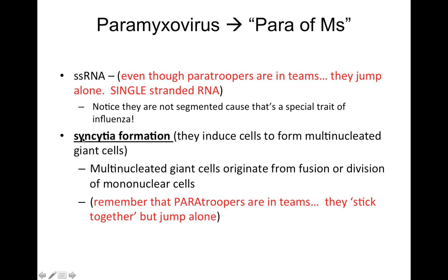Syncytia formation — this is a word you'll probably see a lot in your studies. It means that they induce cells to form multi-nucleated giant cells that clump together. Multi-nucleated giant cells originate from the fusion or division of mononuclear cells. Going back to the paratroopers memory aid: paratroopers are in teams, so they stick together, but then they jump alone — and that reminds us they're single-stranded RNA.